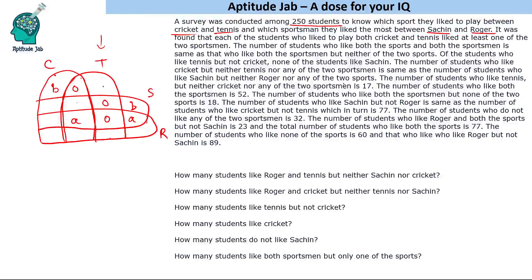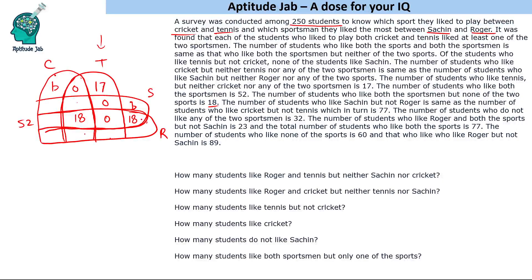The number of students who like tennis but neither cricket nor any of the two sportsmen is 17, so only tennis equals 17. The number of students who like both sportsmen is 52, and those who like both sportsmen but none of the two sports is 18. So a equals 18. We fill 18 in those two parts. Since the total for both sportsmen is 52, and 18 plus 18 equals 36, the shared region with both sports is 16.